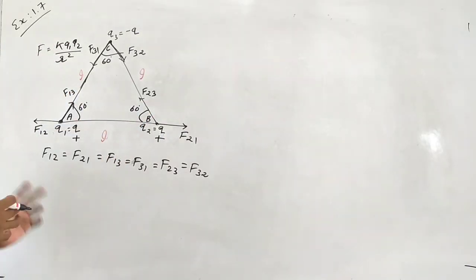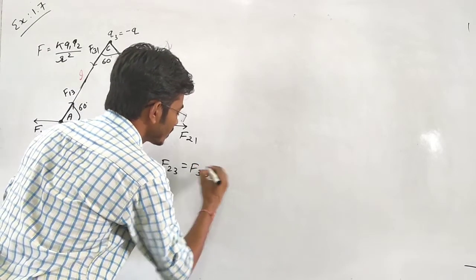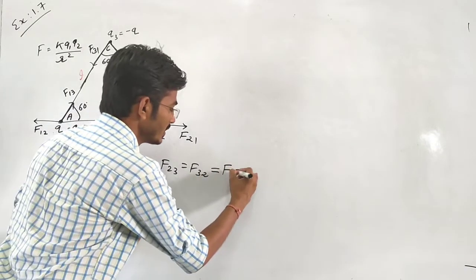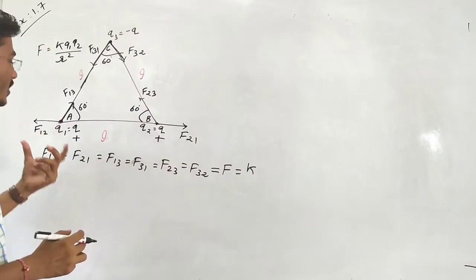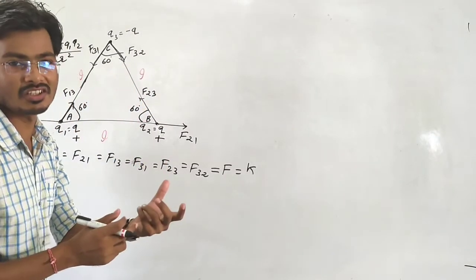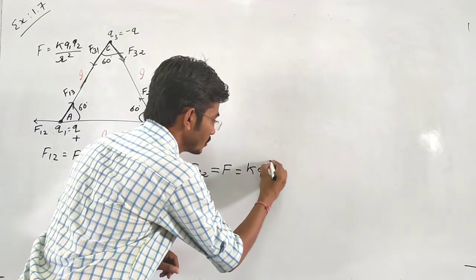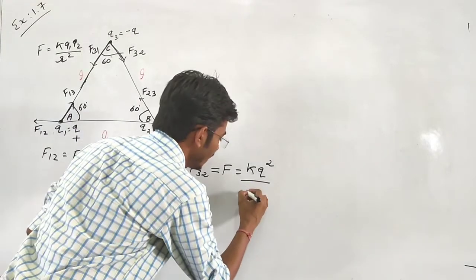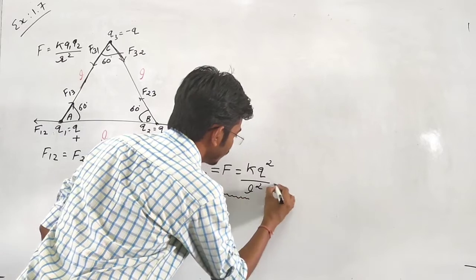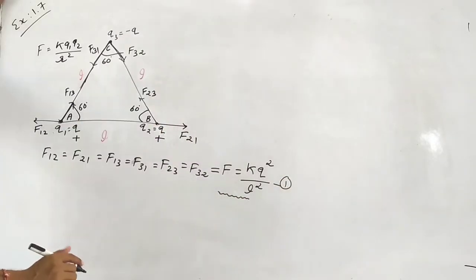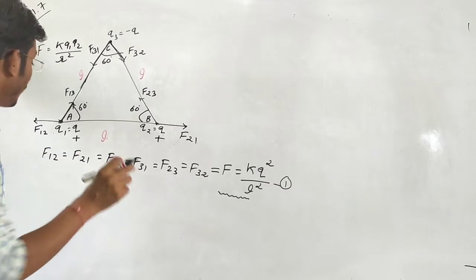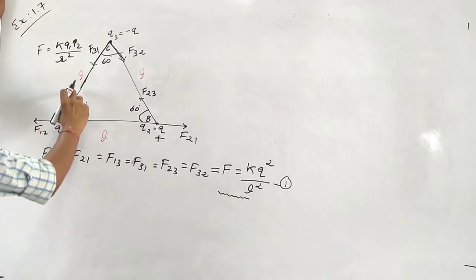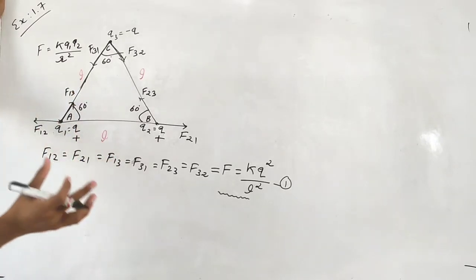Since the magnitudes are the same, the equation for each force equals k times q times q divided by L squared. This is equation number 1. Now, to find the resultant force at point A, we use the parallelogram concept.